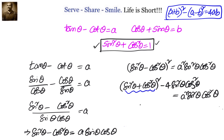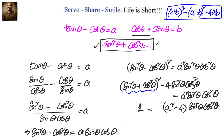So going to the next step, we will have 1 equals to A square plus 4 into sin square theta cos square theta. Now we need to get sin square theta cos square theta in terms of B, so we can eliminate theta.